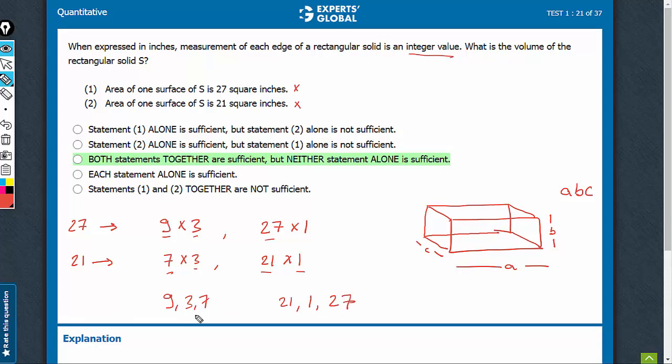Of course, the answers are going to be different. The values are going to be different. The product here is 189. The product here is much bigger, 567. We are still getting two different answers. Even on combining, we don't get a unique answer. Don't worry about this answer. This is just a dummy answer. The right answer is option E.